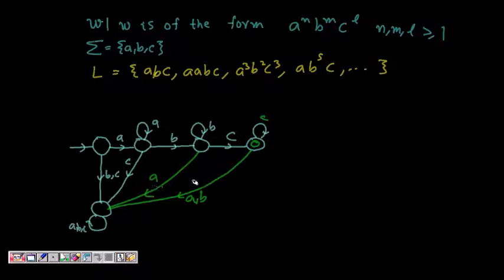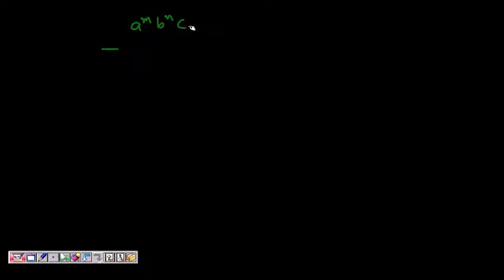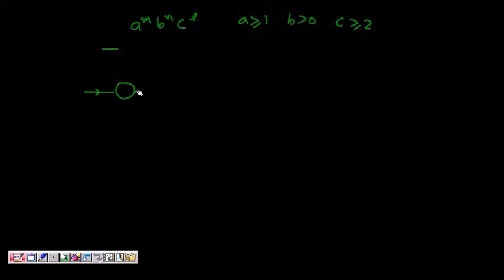Now let's look at a variation. Consider a^m b^n c^l where m ≥ 1, n ≥ 0, and l ≥ 2. What will happen then? Since a ≥ 1, I should still get at least one 'a'. I start, I get one 'a', and then I can have as many a's as I want.